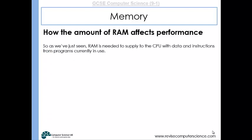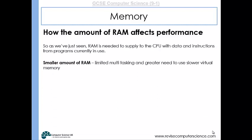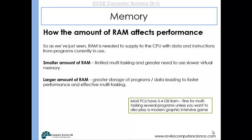The amount of RAM affects performance significantly. A smaller amount of RAM means limited multitasking — you'll have to use more virtual memory when you load up more programs. A larger amount of RAM means greater program storage capacity, so you can have more programs open simultaneously, leading to faster performance without needing to rely on virtual memory as often. Most PCs have about three to four gigabytes of RAM, which is fine for multitasking several programs unless you're playing a graphically intensive game.